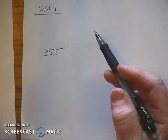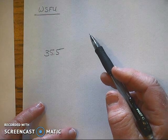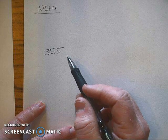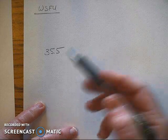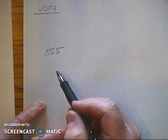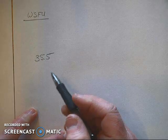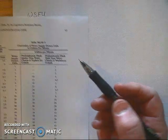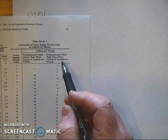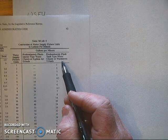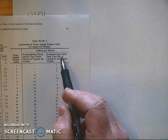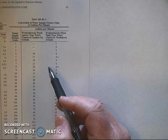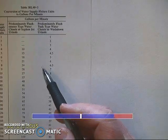To convert the water supply fixture units to gallons per minute, first we take the number of WSFU that we have. In this example I'm going to use 35.5 WSFU and we are going to convert it to predominantly flush tank fixtures for this activity. So the predominance will be for flush tank type fixtures. I will be using the right hand side of this table for this conversion.